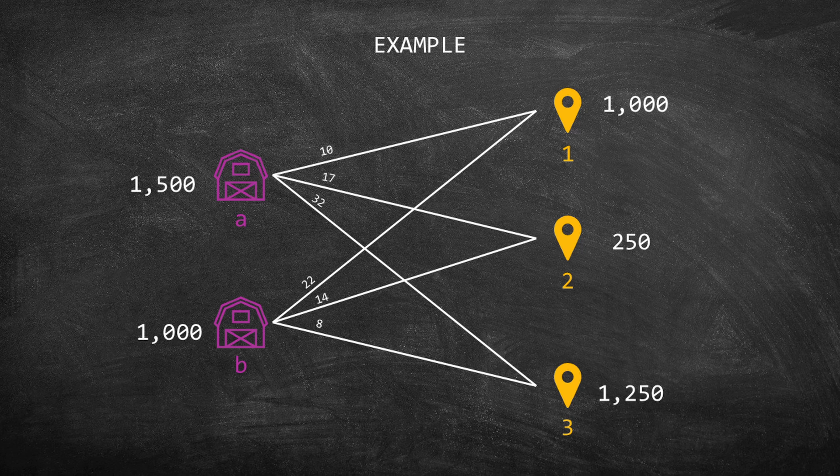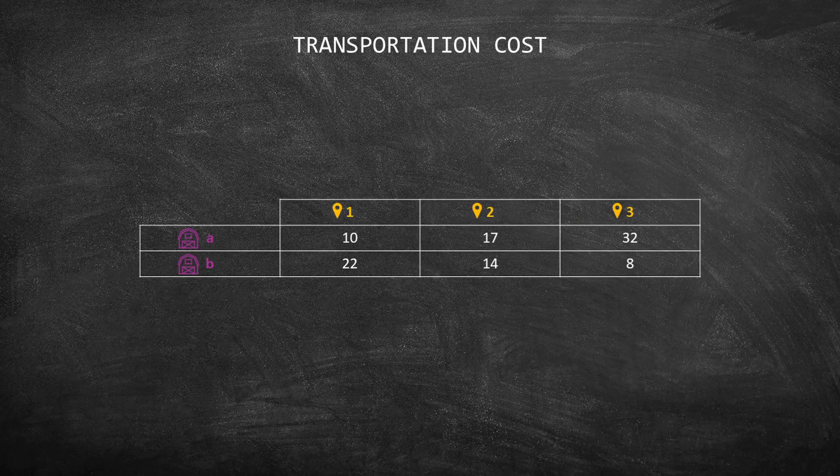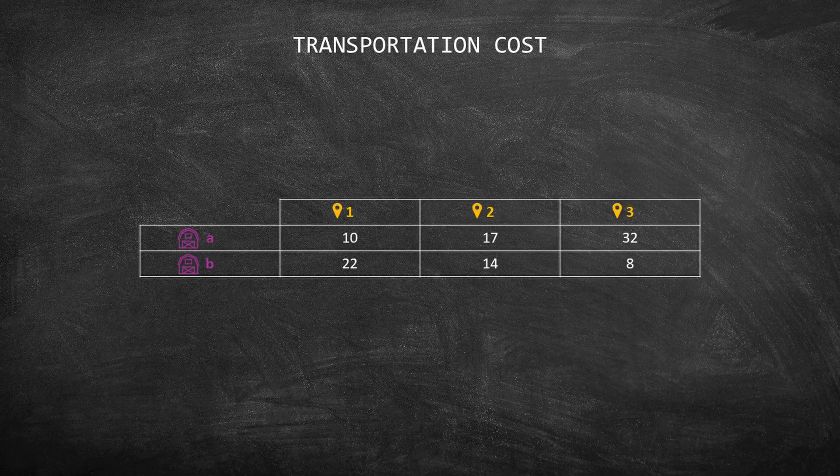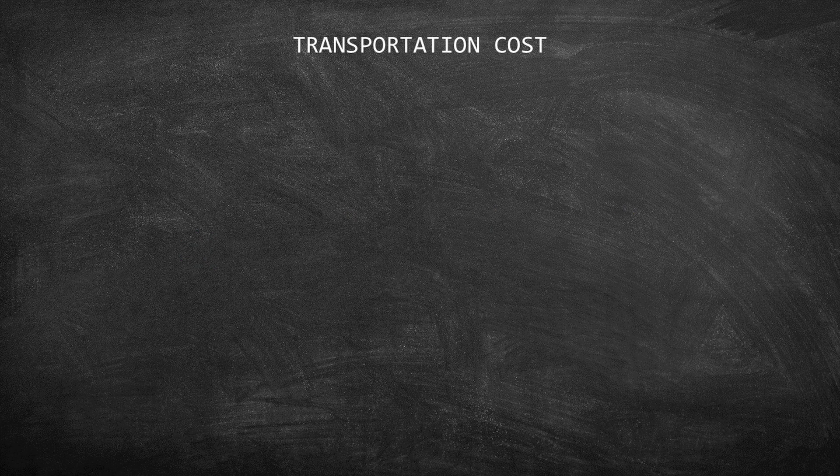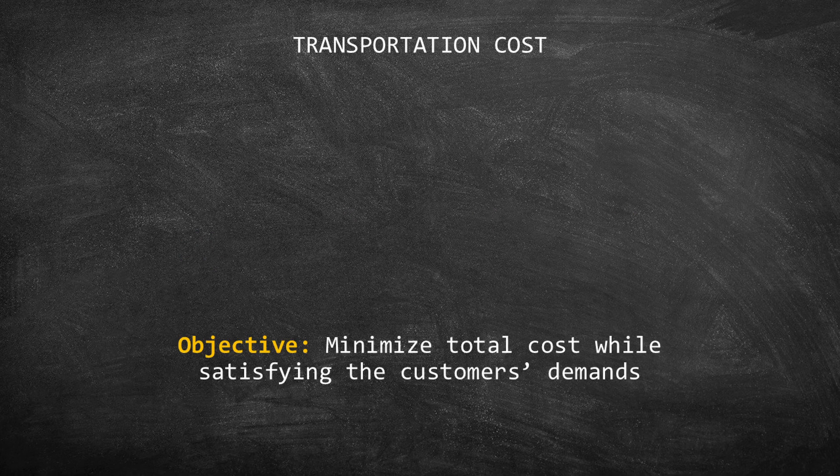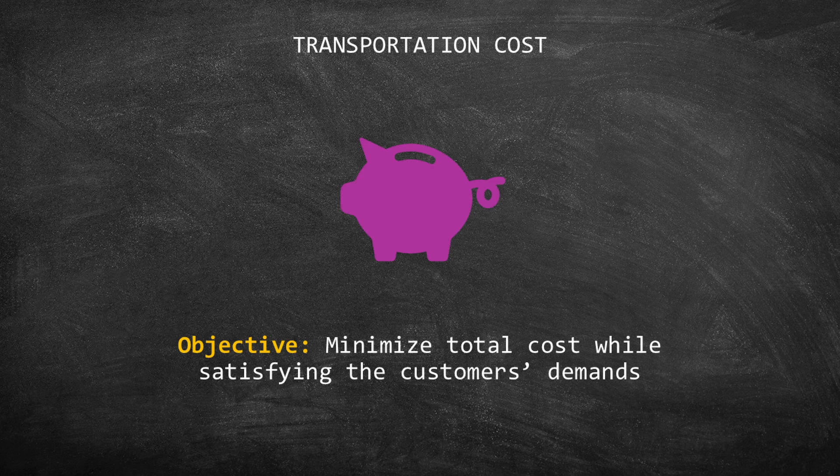Each path has a transportation cost. For example, to deliver a product from supplier A to customer 1, there's a cost of $10 per product. The cost from B to 1 is 22 and so on. We can write the transportation cost in a table as you can see on your screen. The objective of this problem is to minimize the total transportation cost while satisfying the customer's demands.